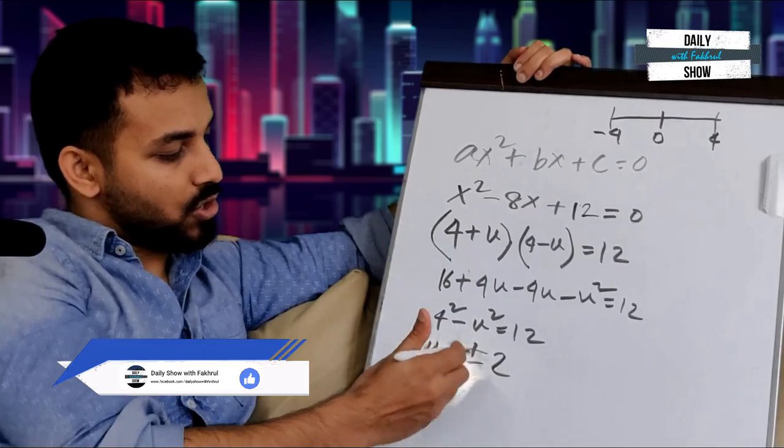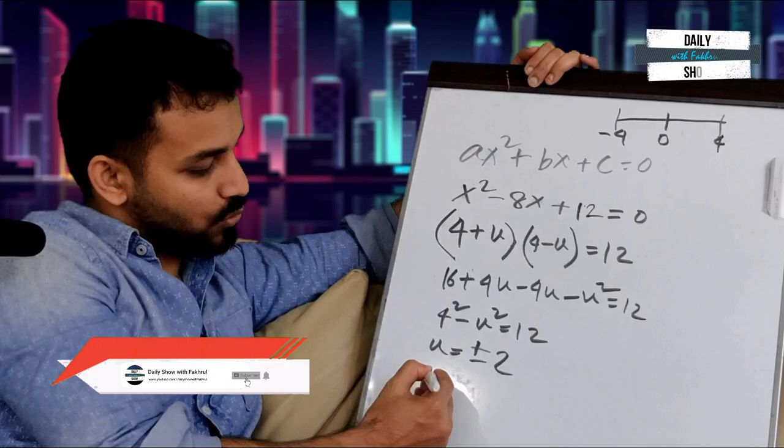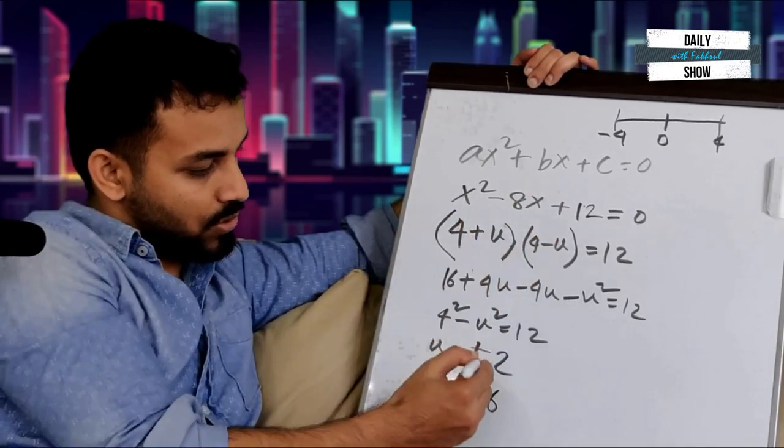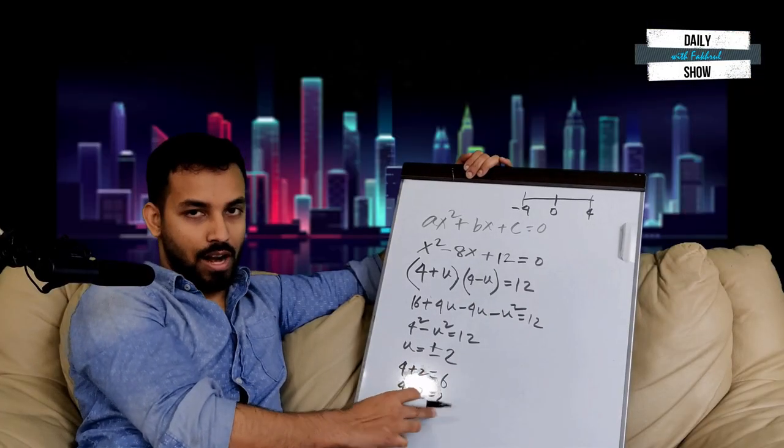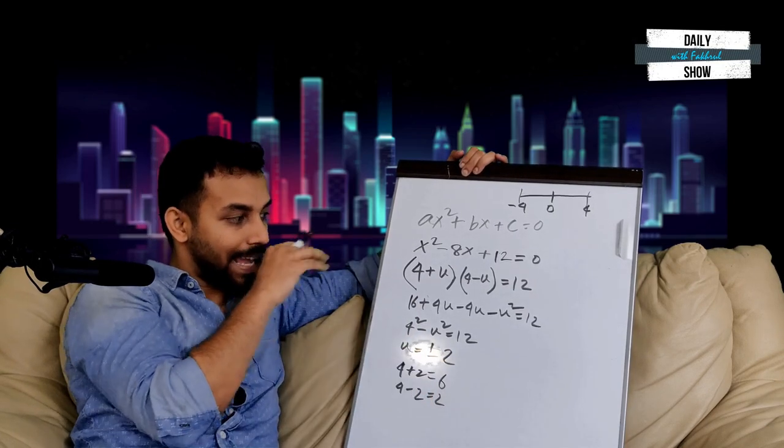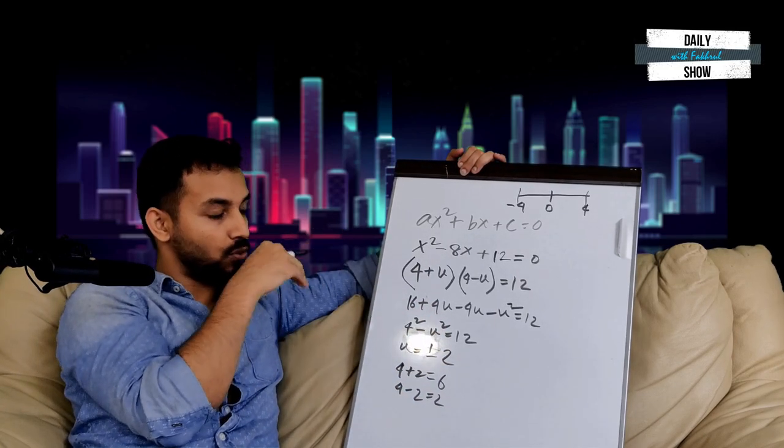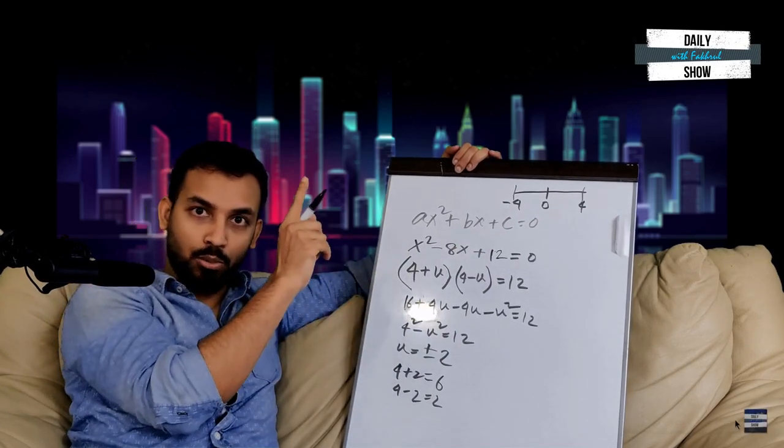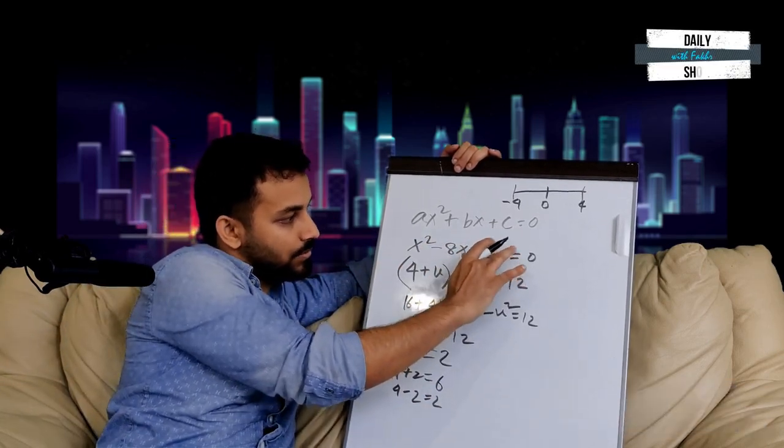So we can solve u equals plus minus 2. If u equals plus 2, then 4 plus 2 equals 6. And if u equals minus 2, then 4 minus 2 equals 2. So the solutions are x equals 6 and x equals 2. The solution is determining which values work.